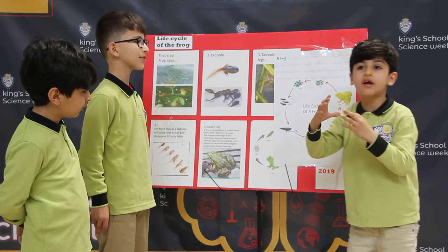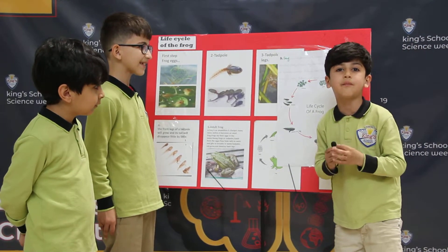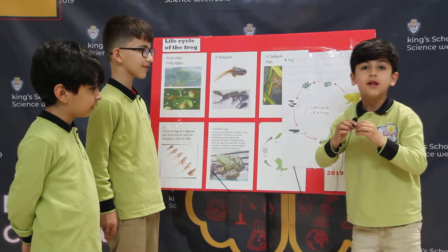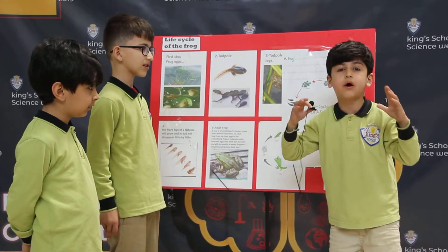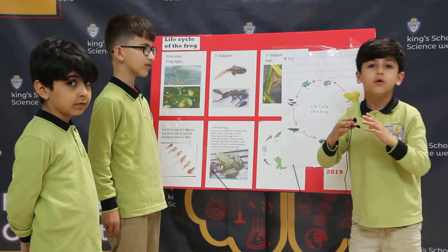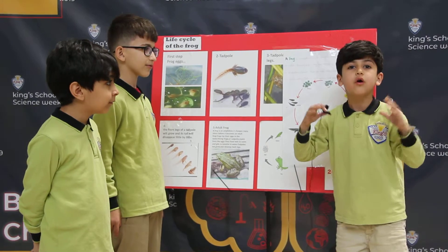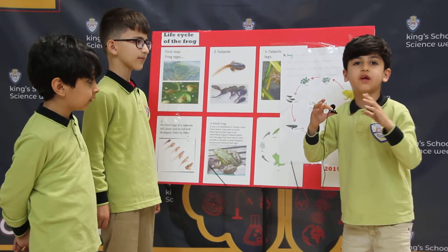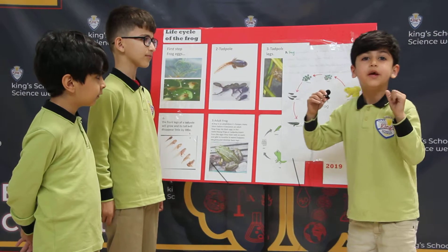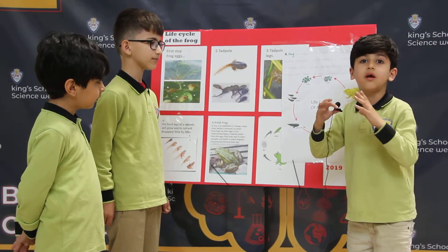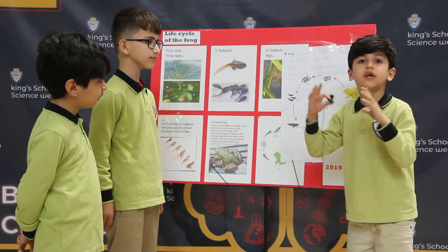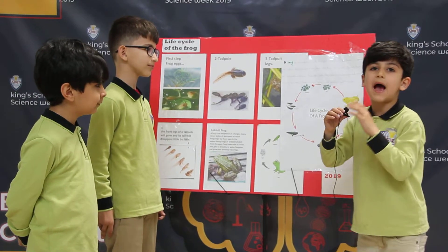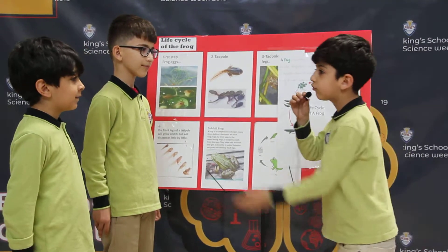A frog is a female and changes many times before it becomes an adult frog. Frogs lay their eggs in the water. Young frogs grow front legs in the water. They have tails to swim, gills to breathe in the water. Tadpoles grow and develop with back legs.